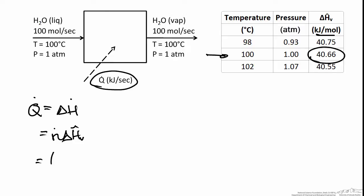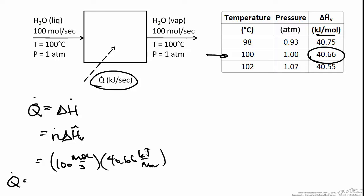Plugging in the numbers: the molar flow rate is 100 moles per second and the published heat of vaporization is 40.66 kilojoules per mole. Therefore Q equals 4066 kilojoules per second, or kilowatts.